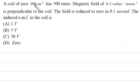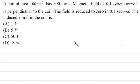Next question: A coil of area 100 cm² has 500 turns. A magnetic field of 0.1 Weber per meter square is perpendicular to the coil. The field is reduced to zero in 0.1 seconds. The induced EMF in the coil is? Given: area = 100 cm² = 100 × 10⁻⁴ m², number of turns N = 500, initial magnetic field B = 0.1 Wb/m², θ = 0°, time interval dt = 0.1 s.